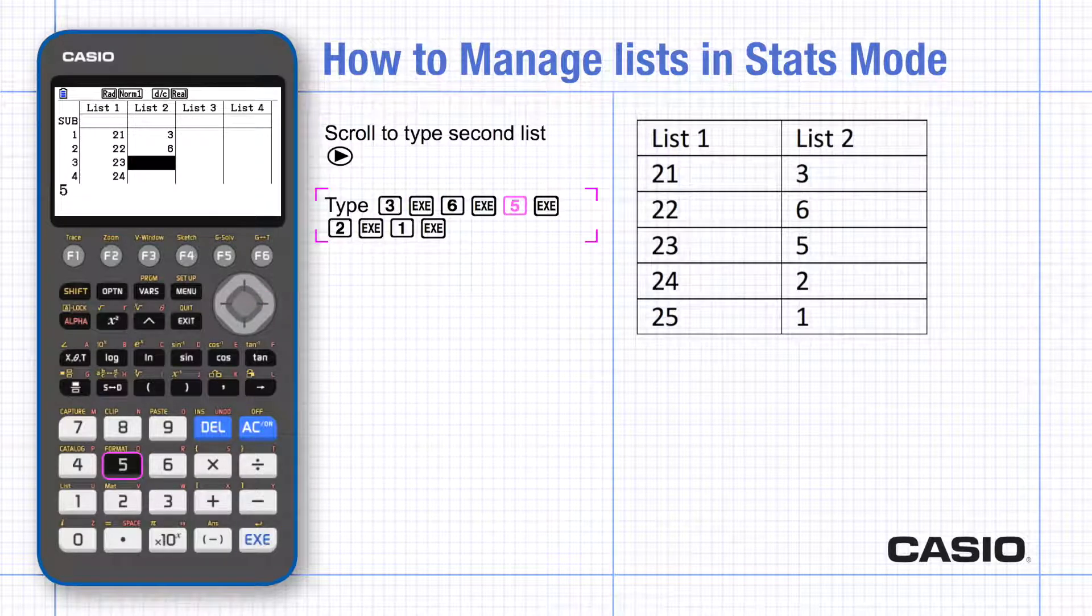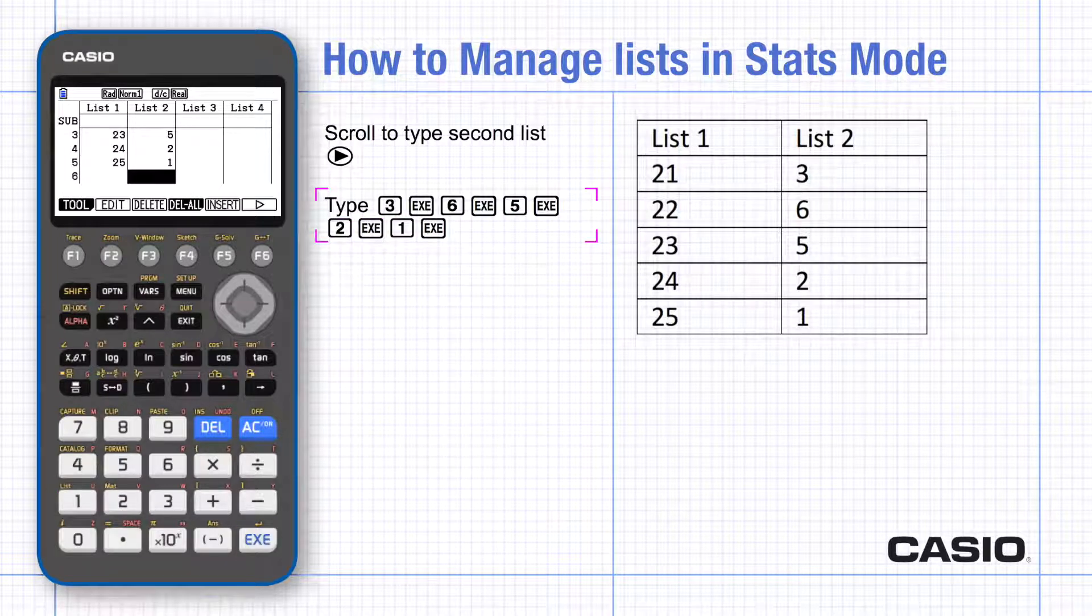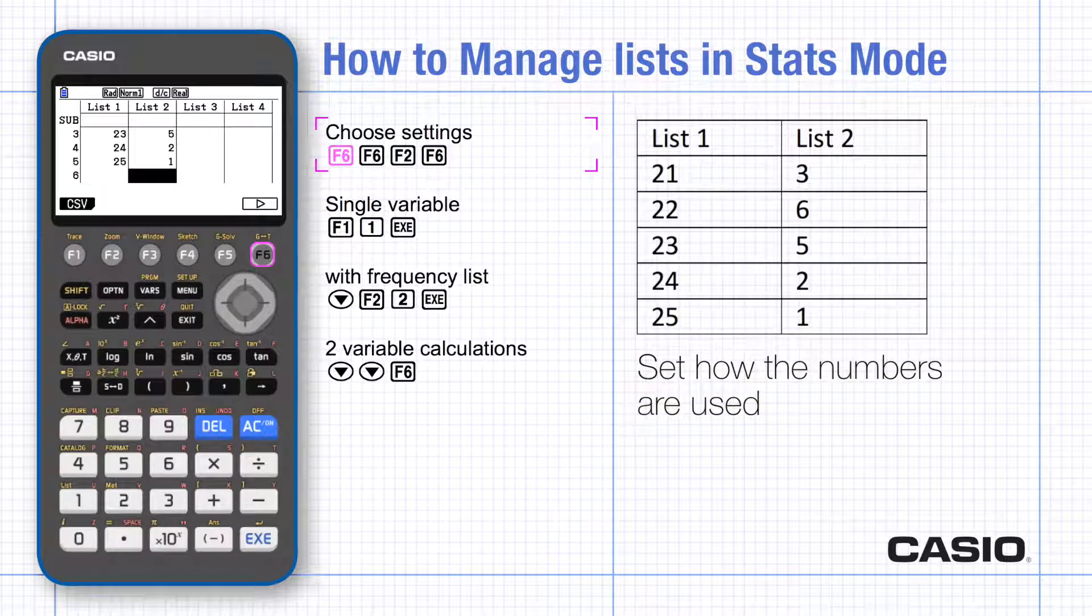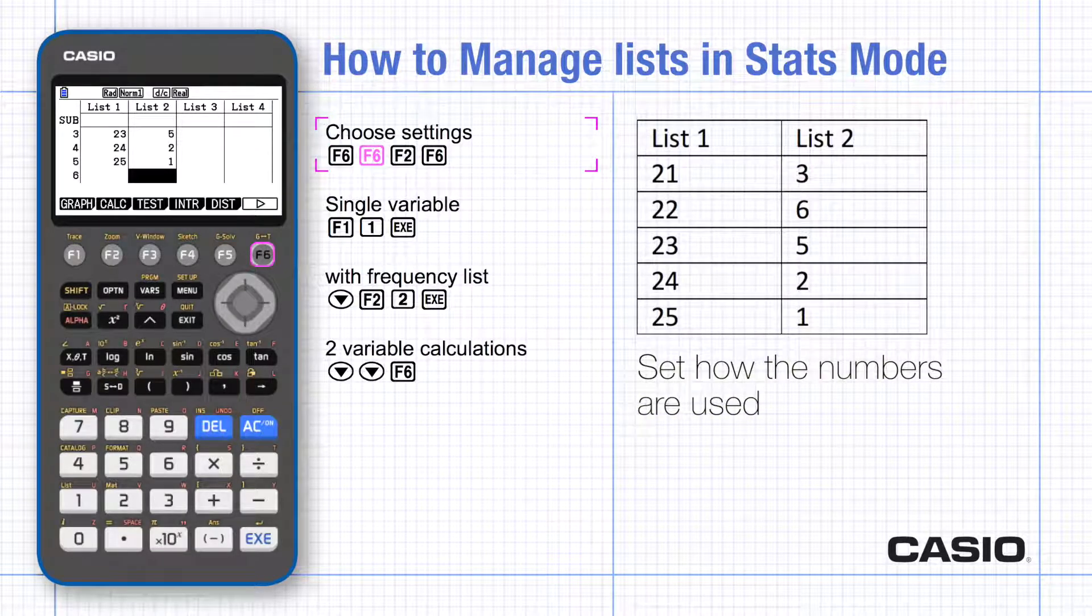In order to make a calculation, you'll need to select which lists to use and in what way. This can be done by returning to the first screen of menus, choosing calc and then set.